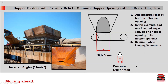If possible, it would be good to relieve pressure from the conveyor belt. It's essential that we minimize the hopper opening as much as possible without restricting flow. We should add pressure relief as close as possible to the bottom of the hopper opening. In this example, we're going to add one inverted angle to convert one hopper opening to two hopper openings, reducing L while keeping W constant. In a photograph you can see a typical hopper from the side and from the top. Notice that an inverted angle has been welded to the bottom of the hopper opening — these are also called tents.